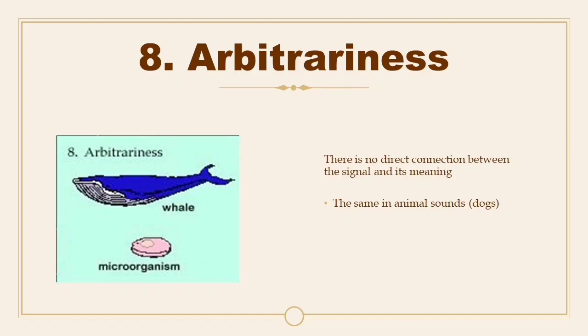Eighth: Arbitrariness. There is no direct connection between the signal and its meaning. For example, something as large as a whale can be referred to by a very short word. Similarly, there is no reason that a four-legged domestic canine should be called 'dog' and not 'chien,' 'perro,' or 'anjing' — all words for dog in other languages. Onomatopoeic words such as 'meow' or 'bark' are often cited as counterexamples, but the similarity is always loose — a dog that actually said 'bark' would be very surprising — and it does not hold up across languages. For example, Spanish dogs say 'guau.' So even onomatopoeic words are, to some extent, arbitrary.